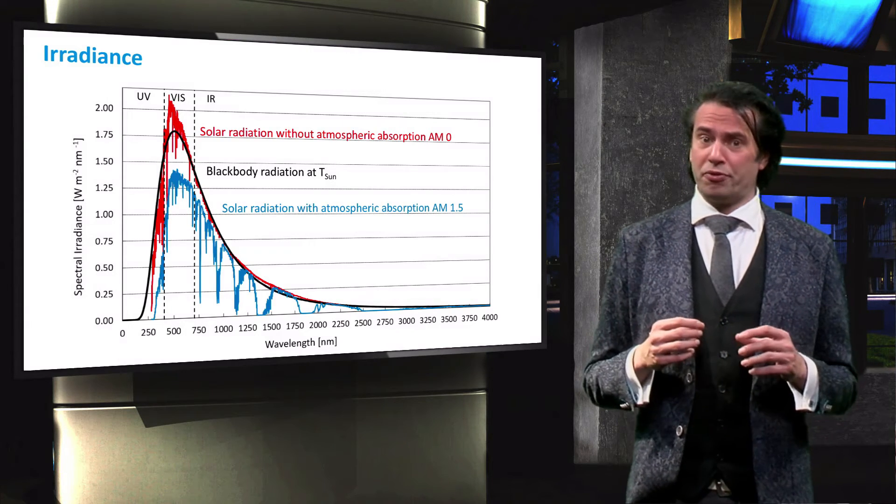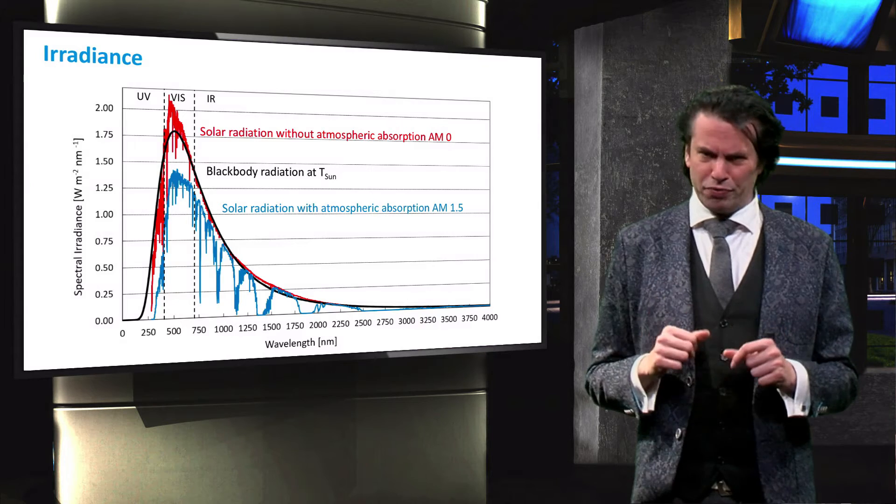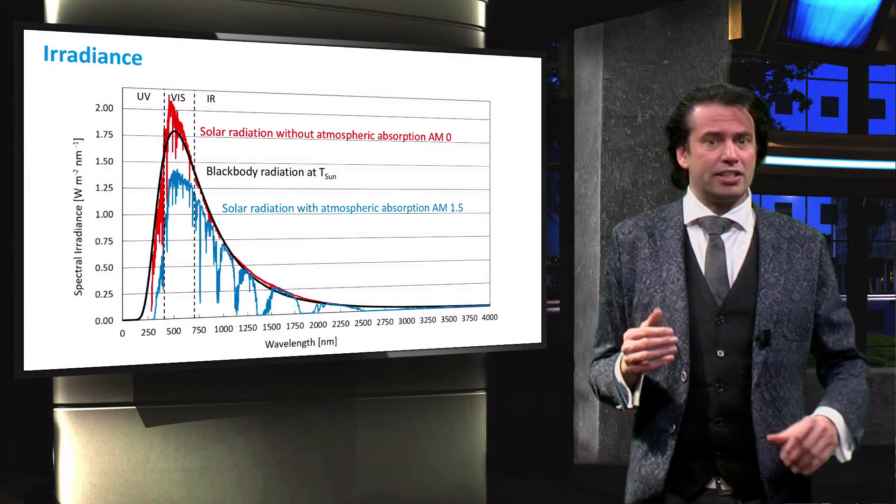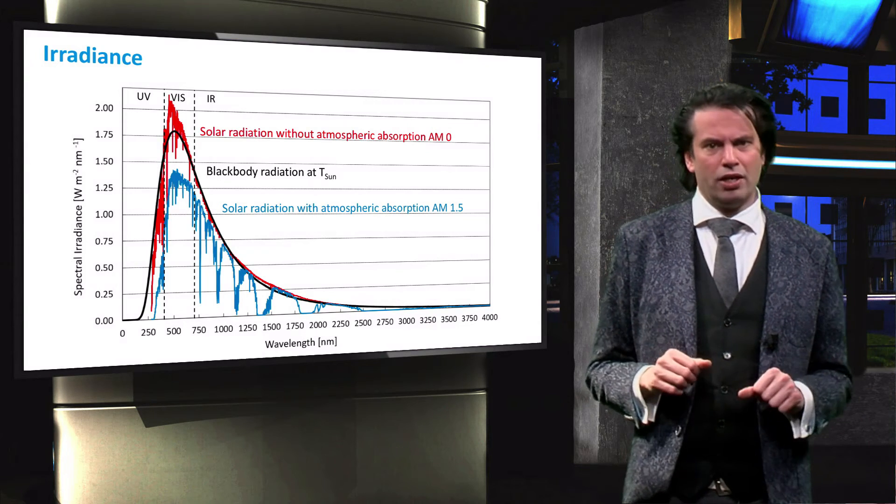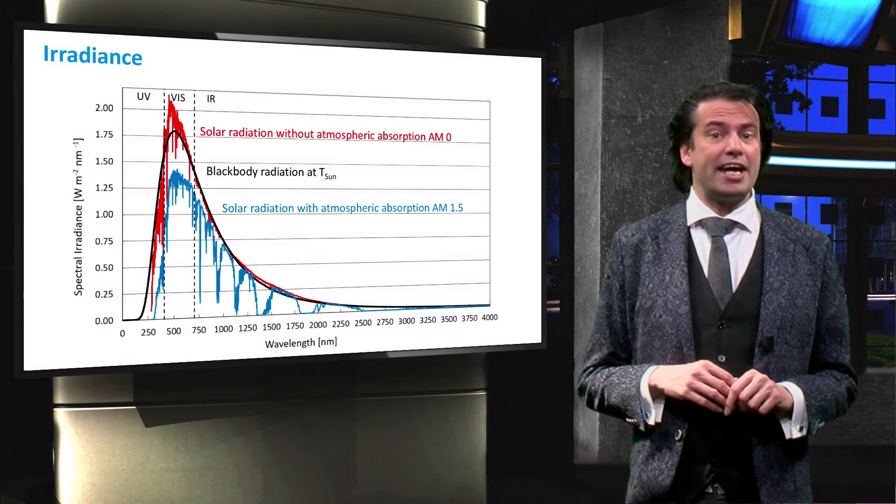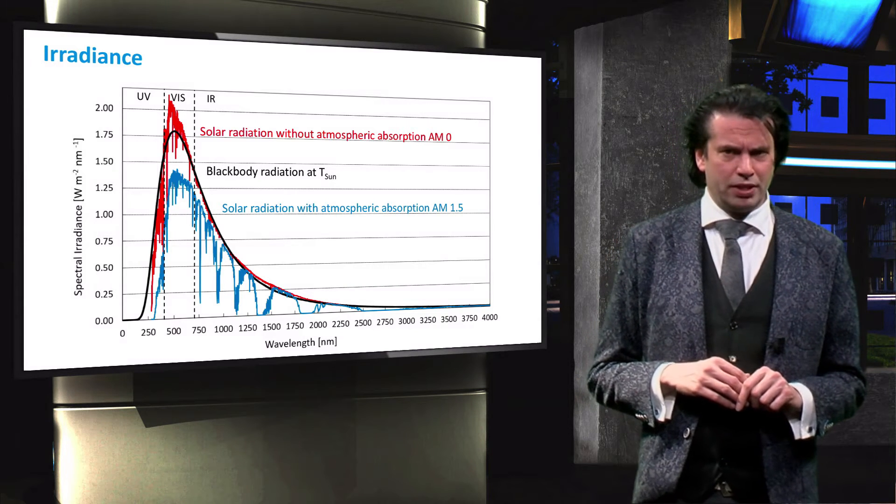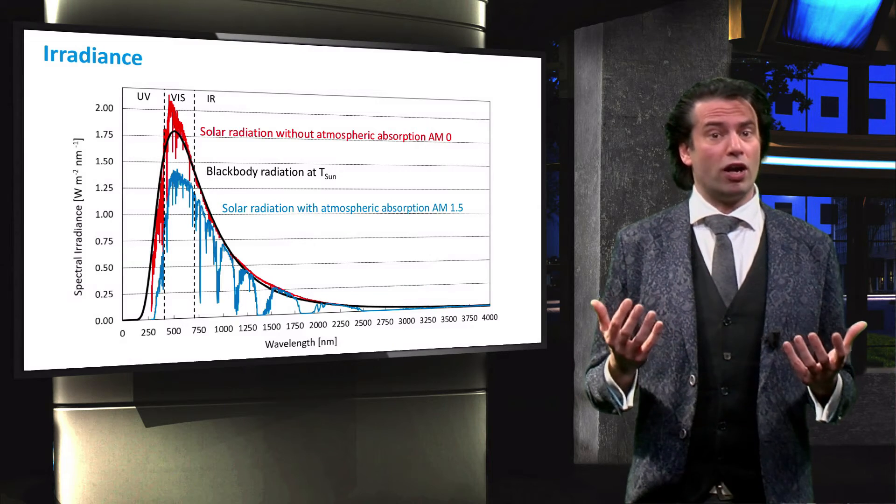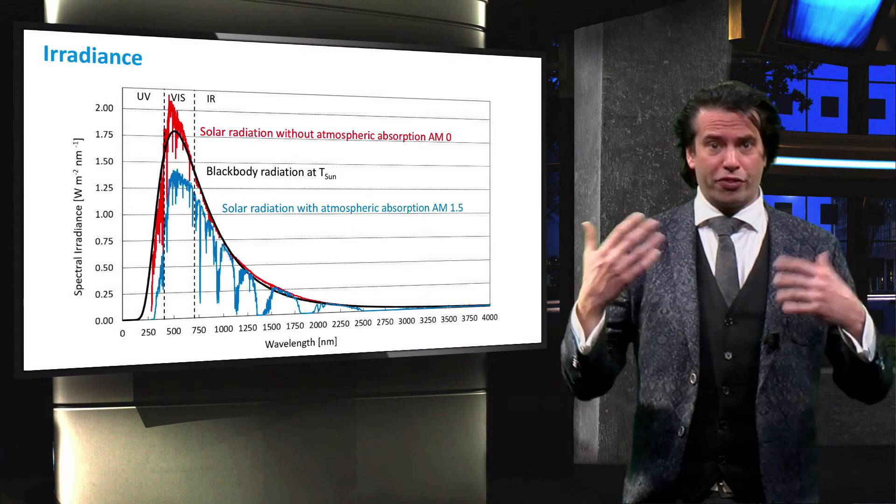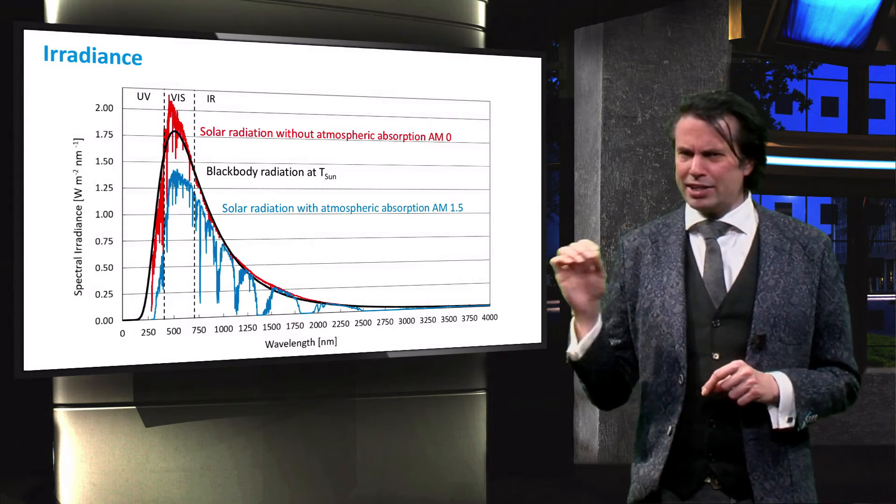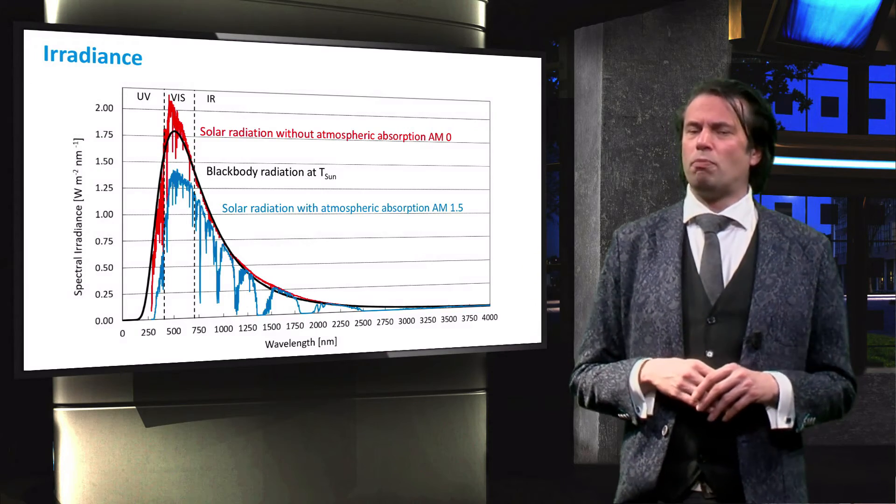If we look at the spectral irradiance on the surface of the Earth, we can see that the irradiance is significantly lower. The shown spectrum is known as the AM1.5 spectrum. It includes absorption of light by particles in Earth's atmosphere. Let's look at this absorption in some more detail.